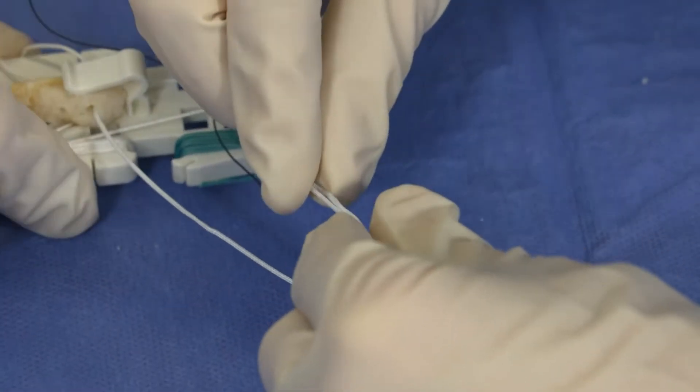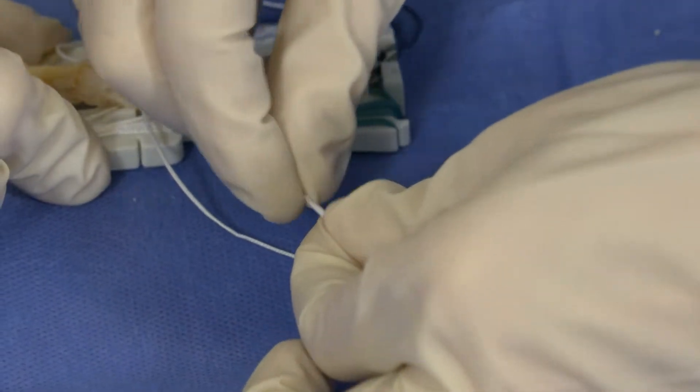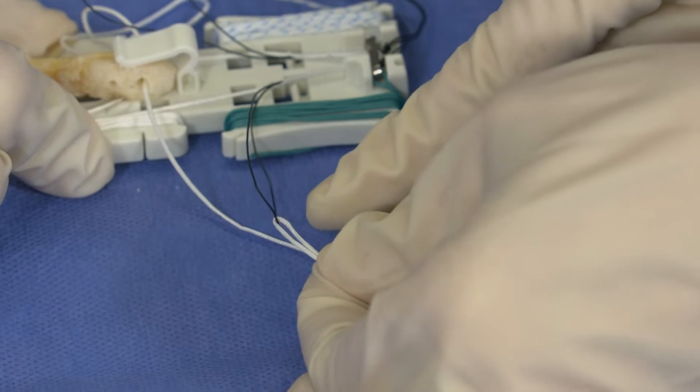It's helpful if you pinch the end of that tensioning suture. So now the tensioning suture is through the black relay loop.